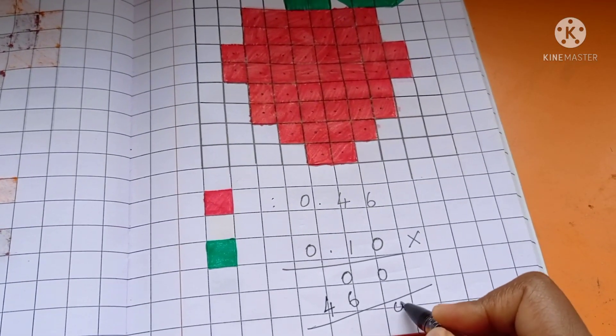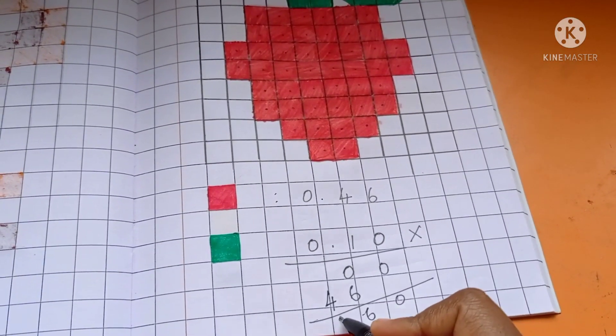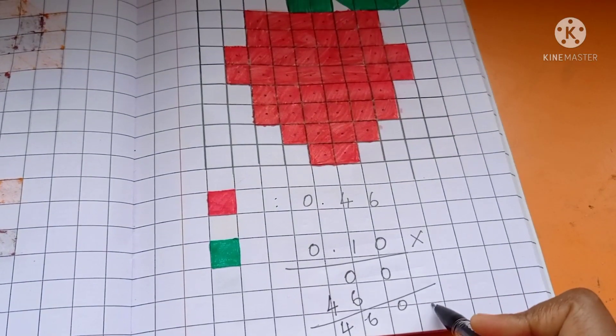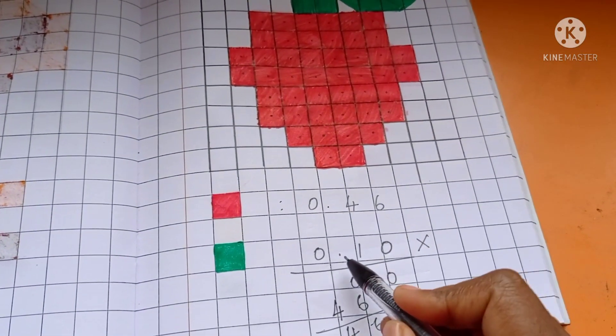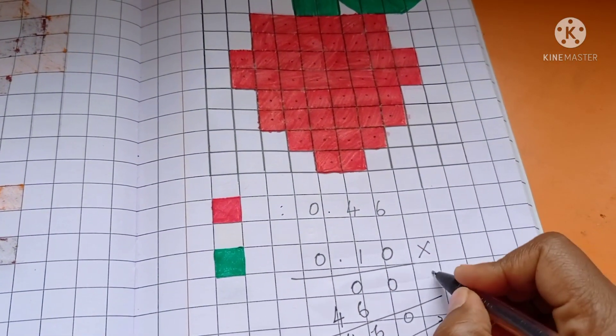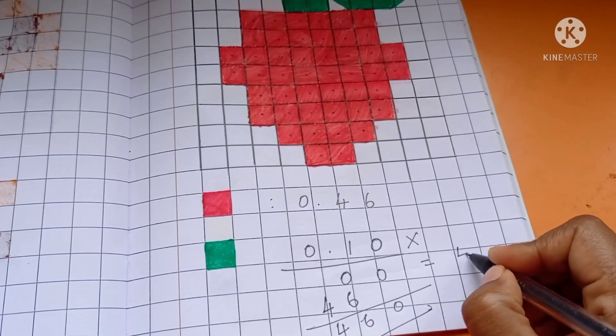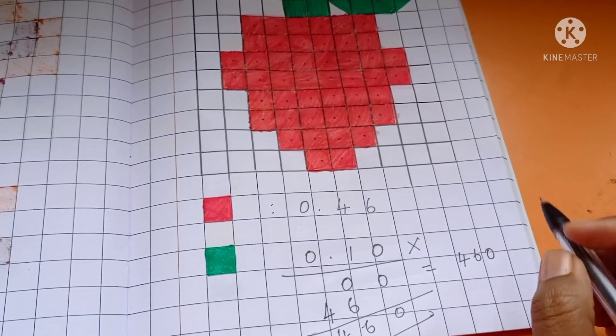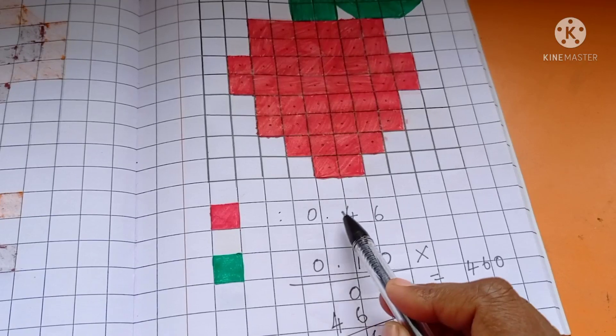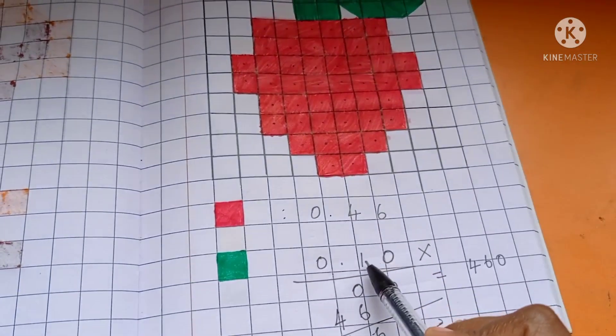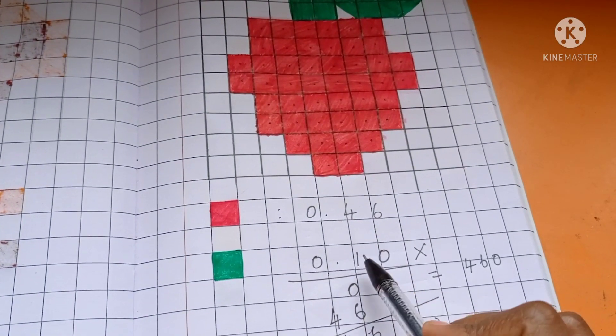If you add, 0.6 are 4. So here after you have to keep decimal point with the answer 4, 6, 0. Count after decimal 1, 2, 3, 4. There are four numbers.